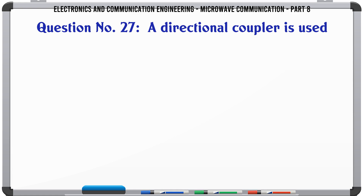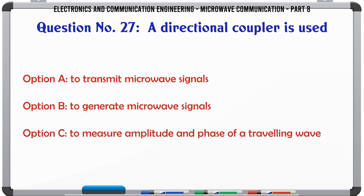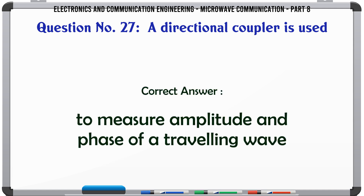A directional coupler is used — A. To transmit microwave signals, B. To generate microwave signals, C. To measure amplitude and phase of a traveling wave, D. Both A and B. The correct answer is: to measure amplitude and phase of a traveling wave.